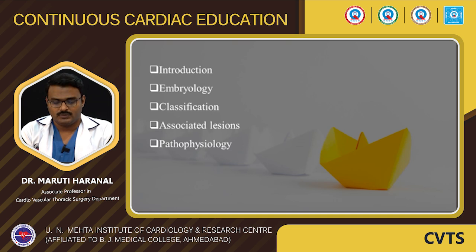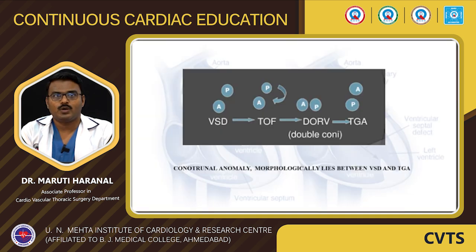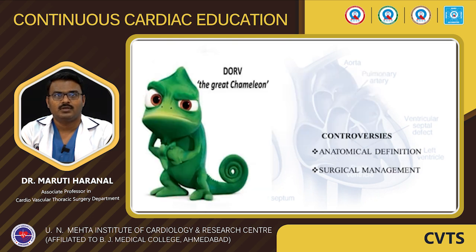In Part Two we are going to discuss the management aspect of DORV. As we all know, DORV is considered one of the conotruncal anomalies. Morphologically it lies between the VSD and TGA. DORV is akin to the great chameleon because a lot of controversy exists in its anatomical definition and surgical management.